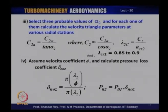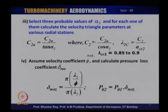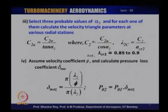One can adopt a technique by which this can be done: select three probable values of alpha_2 at mean diameter, and for each one calculate various velocity triangle parameters at various radial stations. From step 3 onwards, you are calculating for at least three probable values of alpha_2 at mean diameter — if you have the capability, you can go for more. The probable values of alpha_2 are quite often between 60 and 70 degrees, though for a particular design you may choose different values and compute velocity triangles at various stations.